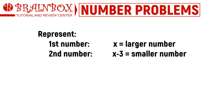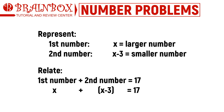We now represent these numbers with variables. According to the problem, we assume that x is the larger number. Since the difference between the numbers is three, the lesser number would be x minus 3. From what we have read, the sum of these two numbers is 17, so the first number plus the second number equals 17. Substituting the representations, we get the equation x plus (x minus 3) equals 17.